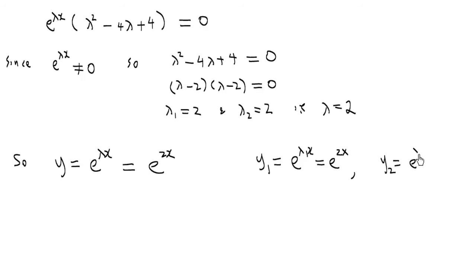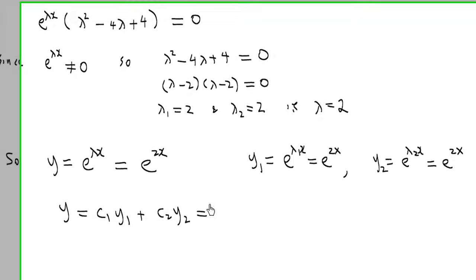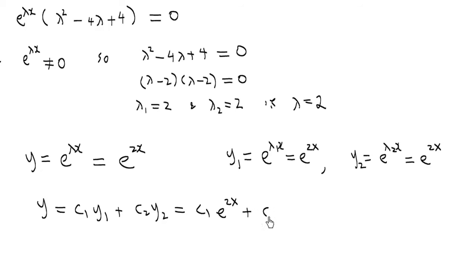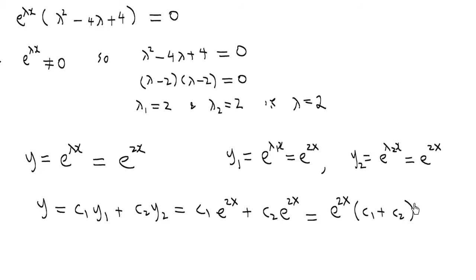Y₂ = e^(λ₂x) = e^(2x) again. So the solution is a combination y = c₁·e^(2x) + c₂·e^(2x). However, these two terms can be combined, and c₁ and c₂ are arbitrary constants, so let's call the combined constant c, giving y = c·e^(2x).